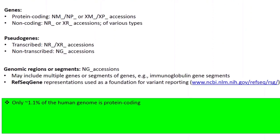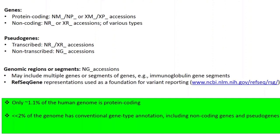However, there are some points to bear in mind. Only about 1.1% of the human genome is actually protein coding. Less than 2% of the genome has conventional gene type annotation when you include non-coding genes and pseudogenes as well as protein coding genes. And it's also known from recent research, particularly GWAS studies, that a lot of disease-associated variation is occurring in the non-coding genome.